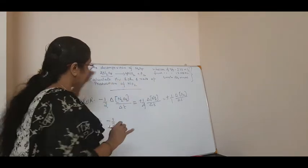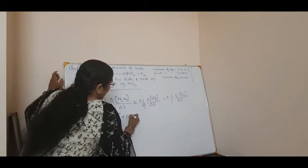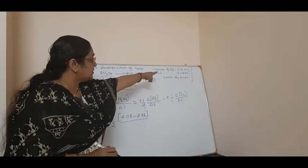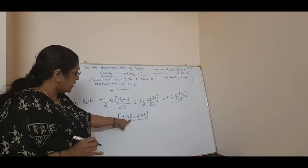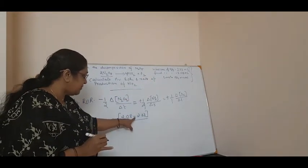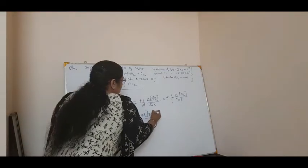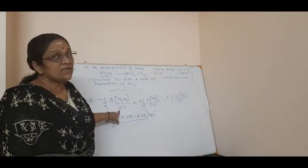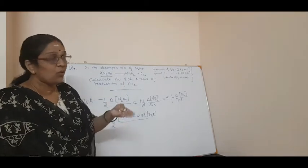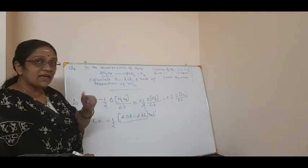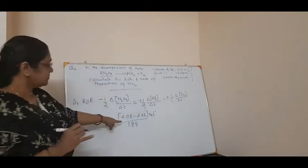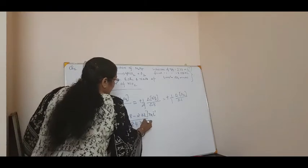The final concentration of N₂O₅ is 2.08, so it is 2.08 minus 2.33 mol per liter, divided by delta T which is T2 minus T1. T1 is zero because it is from the starting, and T2 is 184 minutes. So T2 minus T1 is 184 minus 0, which becomes 184 minutes.